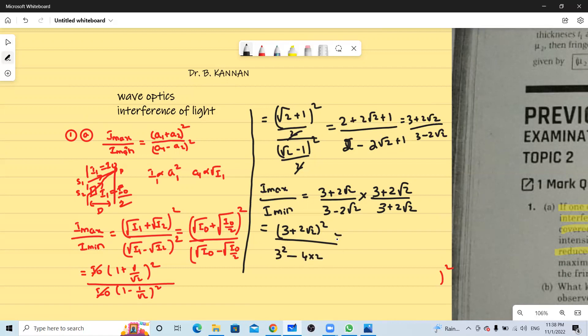So when you expand this again in a plus b whole square formula a square plus 2 into a into b plus b square by this is 9 minus 8. So this is 9 plus 6 times 2 or 12 root 2 plus 8 by 1. So the answer is 17 plus 12 root 2. This is the answer.